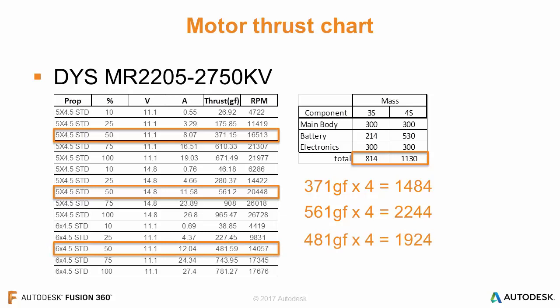Now let's look at what it means to run a 3-cell system with a 6-inch prop instead of a 5-inch. At 50% we're getting 481 grams of force, which gives us 1924 grams total, and we're still only lifting 814 grams — so this gives us the best thrust ratio. But we have to be careful: instead of needing 8 amps of current at 50% on the 5-inch prop, we now need 12 amps on the 6-inch prop. So even though we're lifting more without increasing mass, we're not going to have nearly the same flight time.